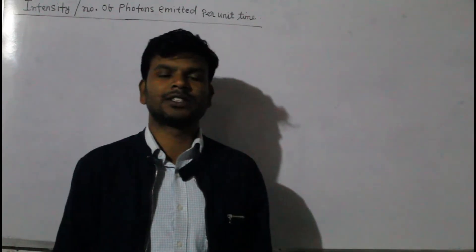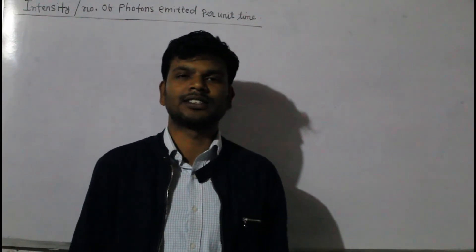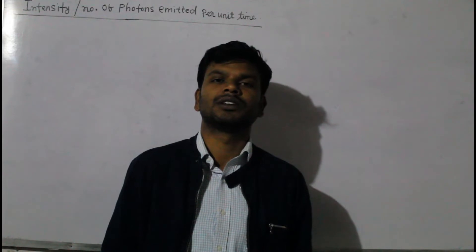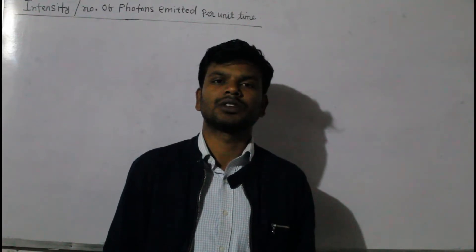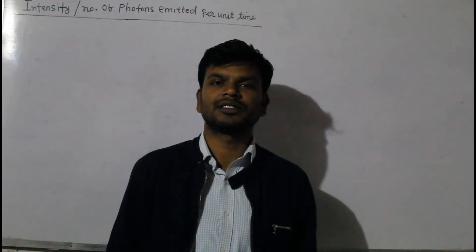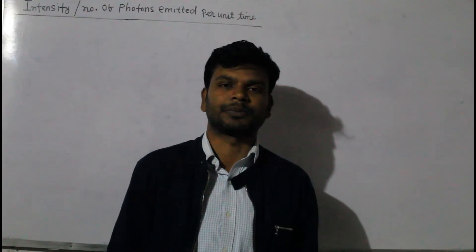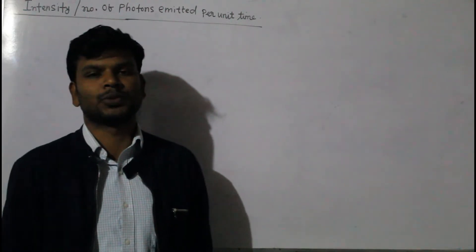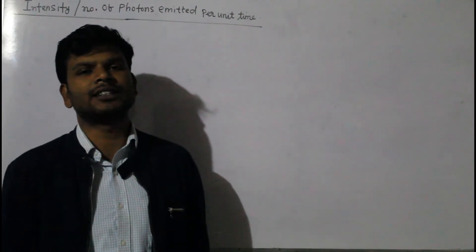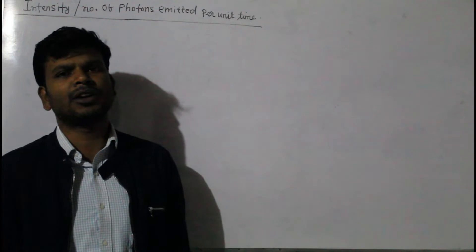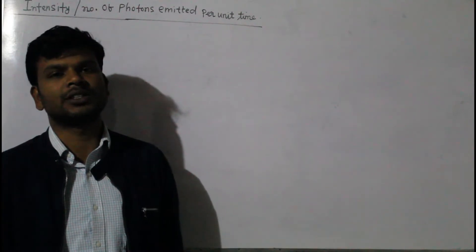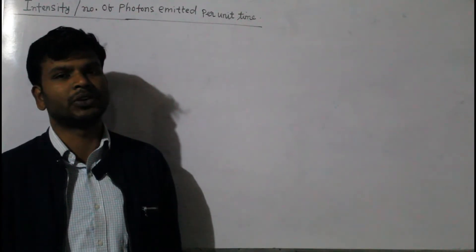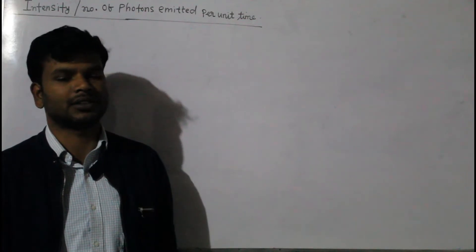In this video we will study about the intensity and the number of photons emitted from a source of electromagnetic radiations per unit time. Intensity is defined as the number of photons incident on a surface per unit area per unit time, normal to the surface.